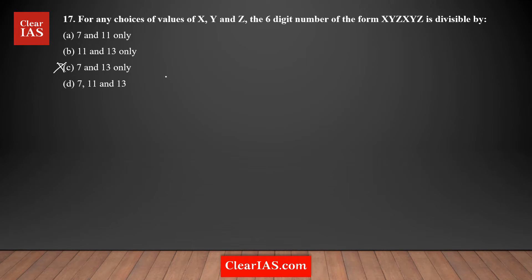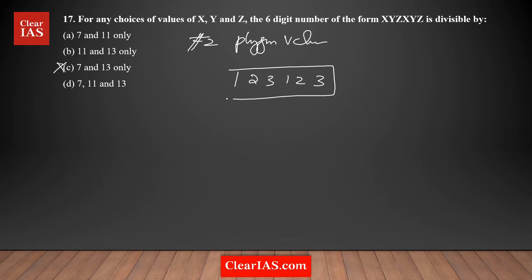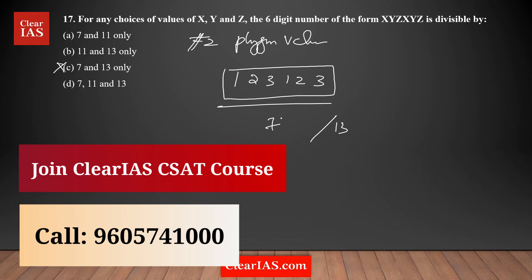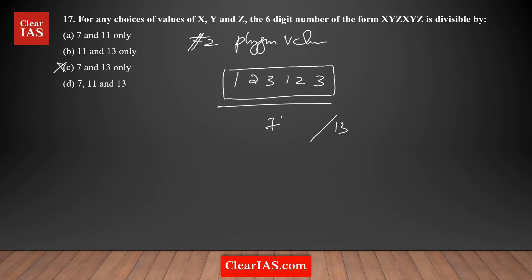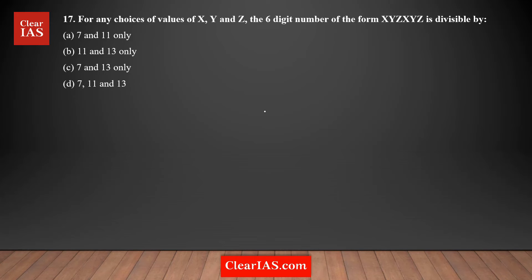Another approach is plugging in values — for example, using 123123. You could try dividing by 11, 13, and 7 directly to check. However, since it's a six-digit number and there are no quick rules for 7 or 13, this is time-consuming. It's an alternate option depending on how much time you have, but there is an easier way using the pattern in xyzxyz.